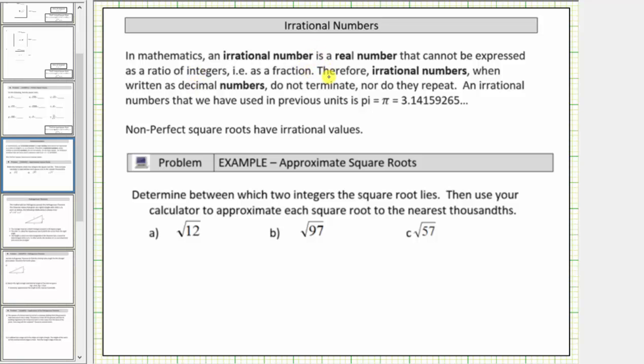In mathematics, an irrational number is a real number that cannot be expressed as a ratio of integers, for example as a fraction when the numerator and denominator are integers.